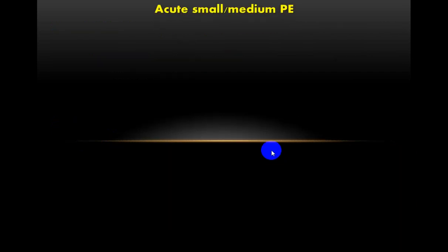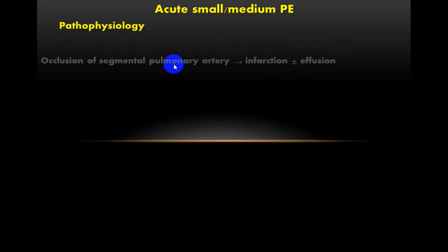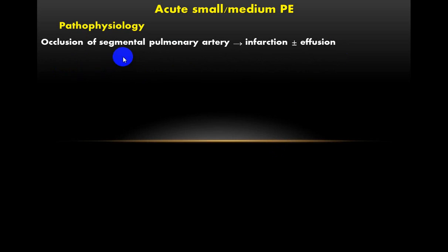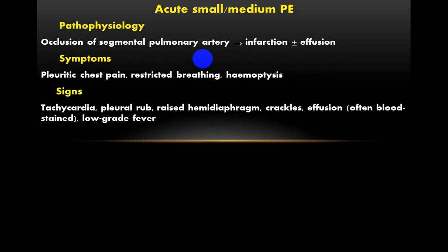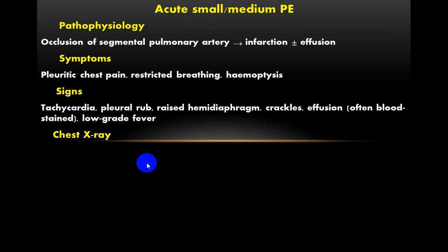The second type is acute small to medium pulmonary embolization. Physiologically, there is occlusion of segmental pulmonary vessels leading to infarction with or without effusion. Symptoms include pleuritic chest pain, restricted breathing, and hemoptysis. Signs include tachycardia, pleural rub, raised hemidiaphragm, crackles, blood-stained pleural effusion, and low-grade fever.